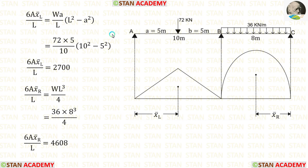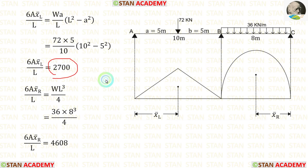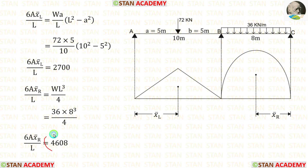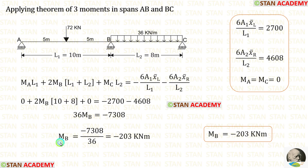In the formula, let us apply the values. In span AB, a is equal to 5m, W is equal to 72 kN, and the length is 10m. After calculation, we are getting 2700. In the second span BC, W is 36 and length is 8m. After applying in the formula, we are getting 4608. Now let us apply these values inside the three moments equation. Finally, we are getting MB equal to minus 203 kNm.